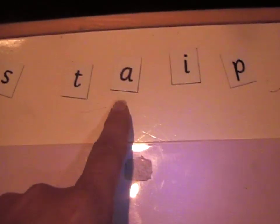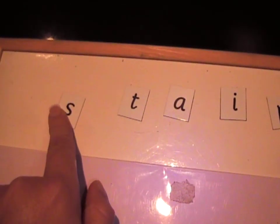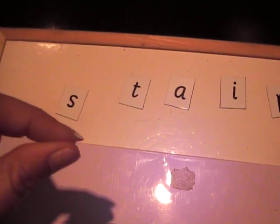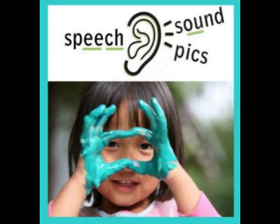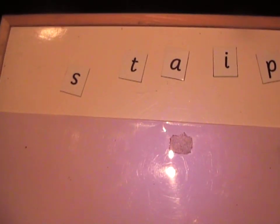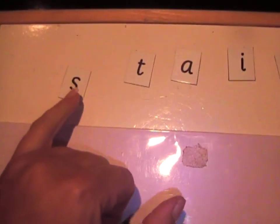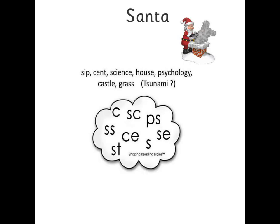They need to be able to do that really before they start thinking about the representations of those speech sounds. I call them pictures of speech sounds. So that's just a picture of a speech sound. That's one of the pictures of the speech sound s. There's actually eight different pictures for the speech sound s but that's the first one that we learn.